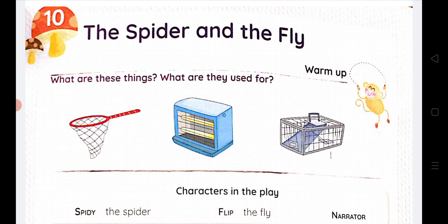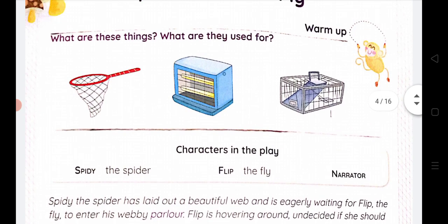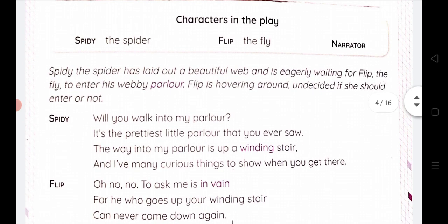See, the first warm-up is given here, as we all do it first. What are these things? What are they used for? The first is the net, and it is used for catching butterflies and insects. The second is, I think, an oven. And the third is also a container — I think it is a mouse catcher. Please do write the answers and tell me. We will discuss it.